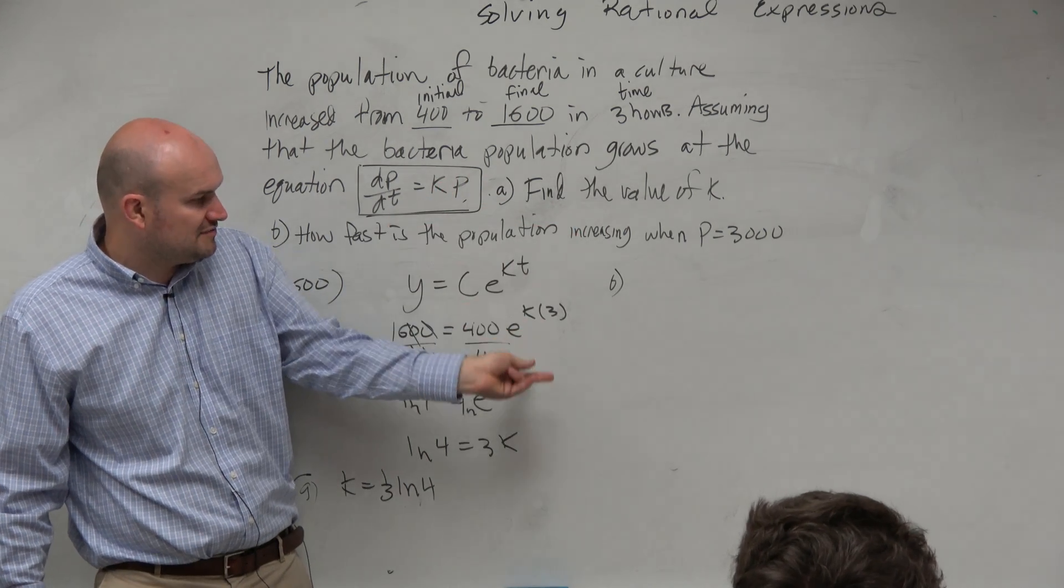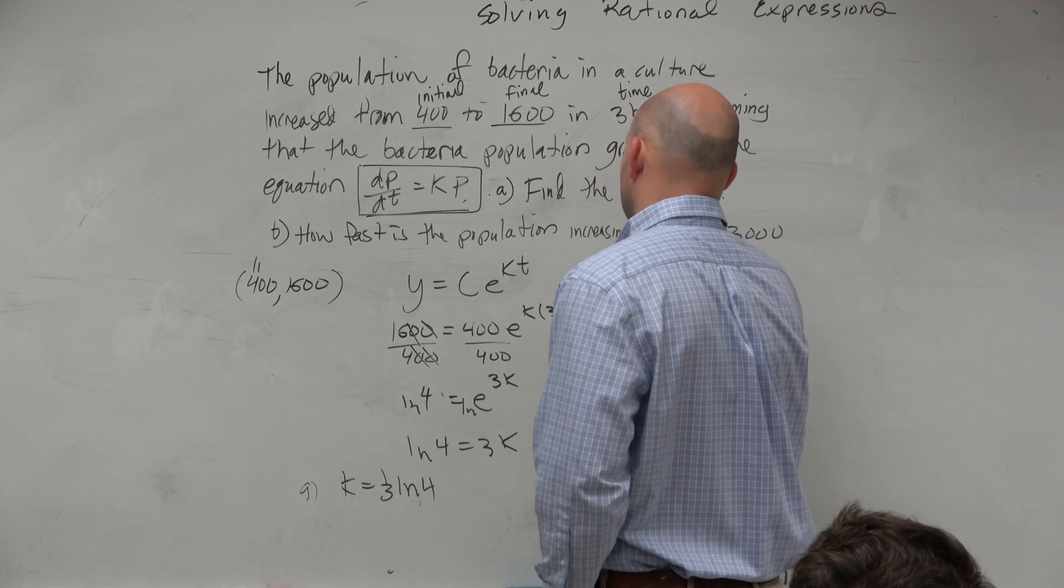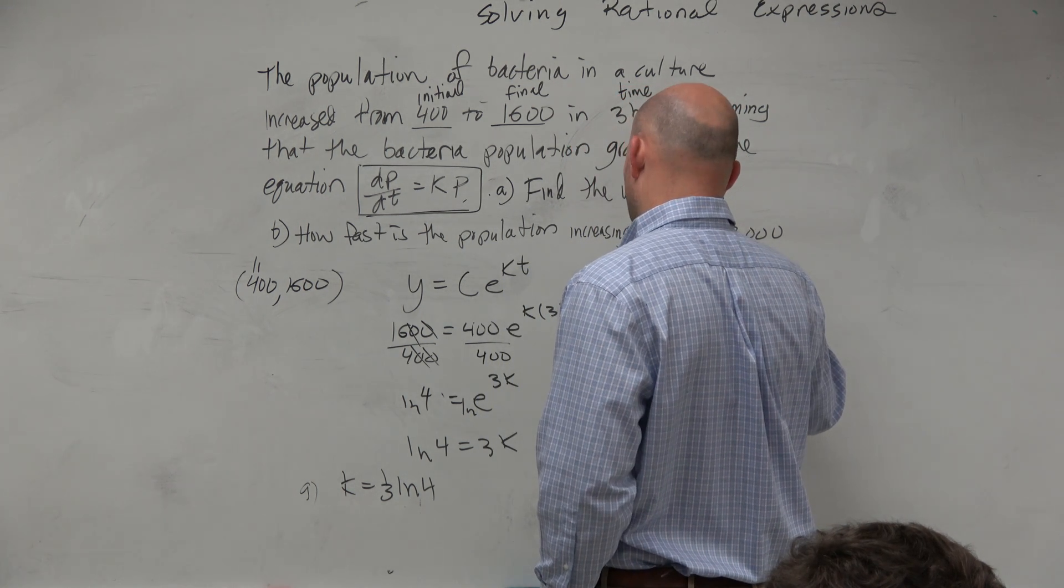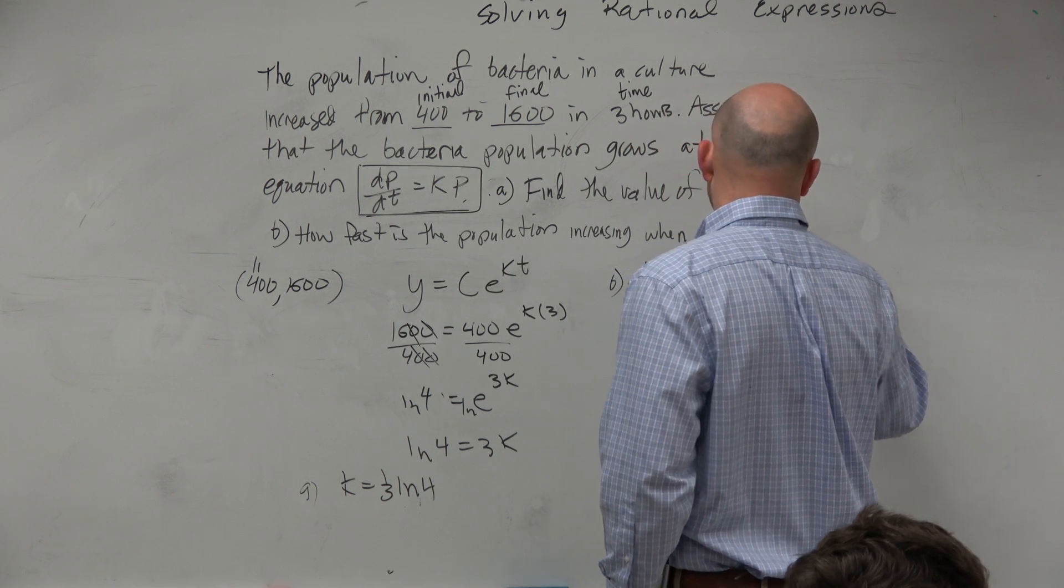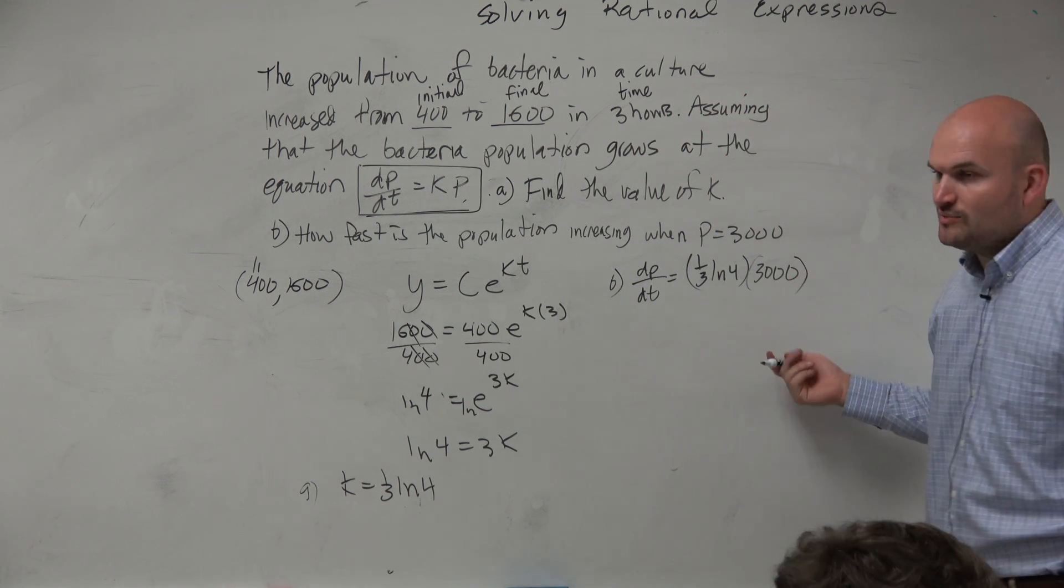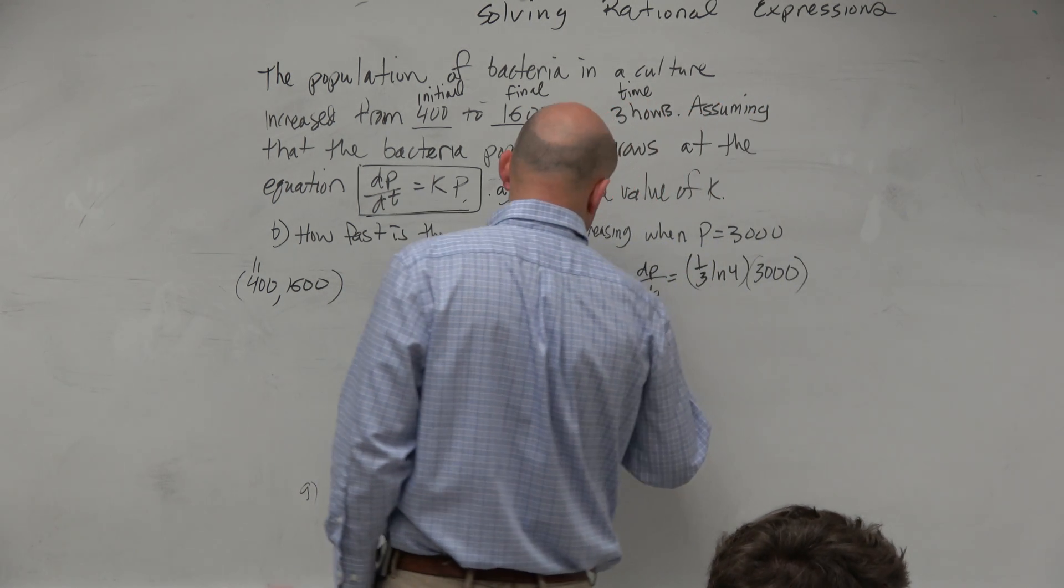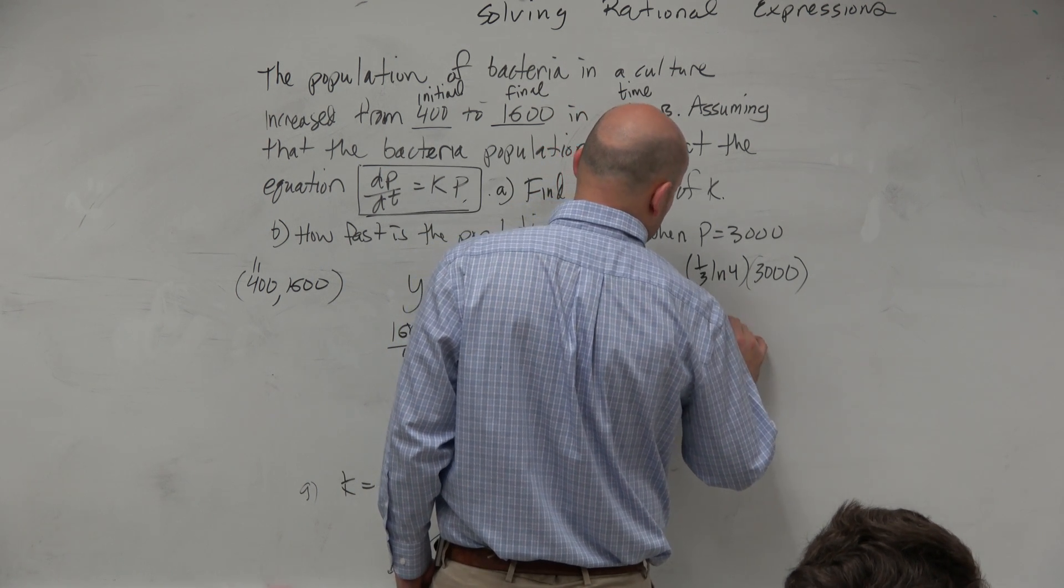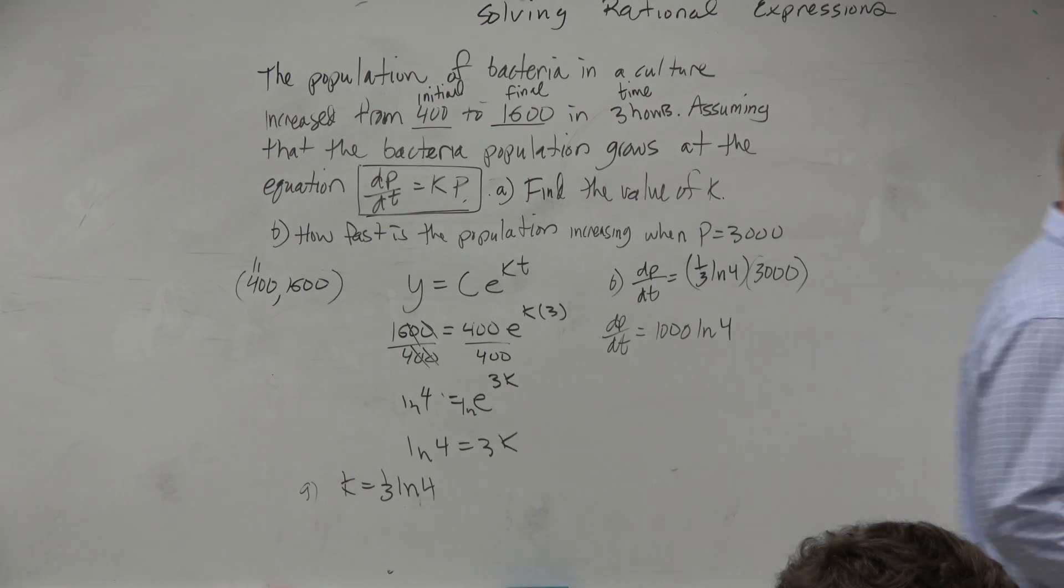Well, it says p is 3,000, and we just found k, right? So we could say dp/dt is equal to one-third ln of 4 times 3,000. Now, the really only thing I can multiply here is the 3,000 times one-third, which would be 1,000. So dp/dt is equal to 1,000 times ln of 4. Yes, no, maybe so.